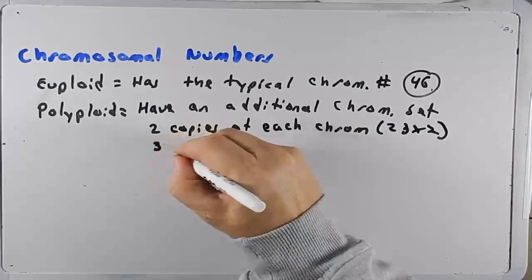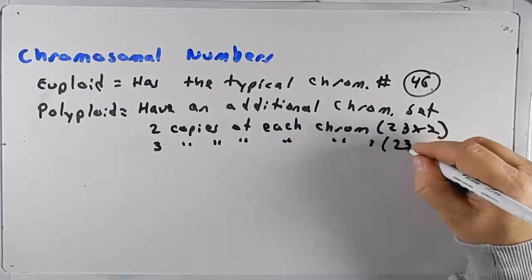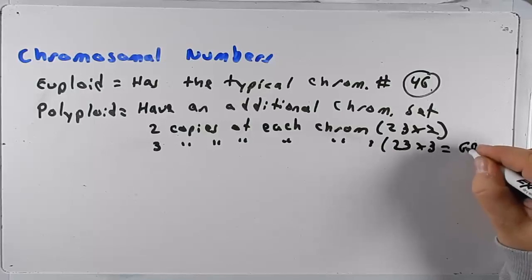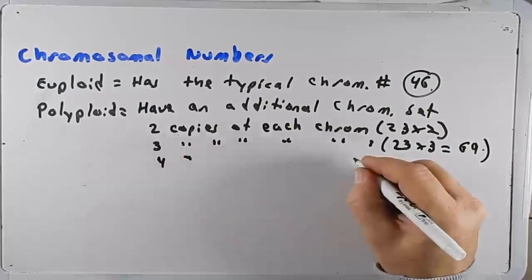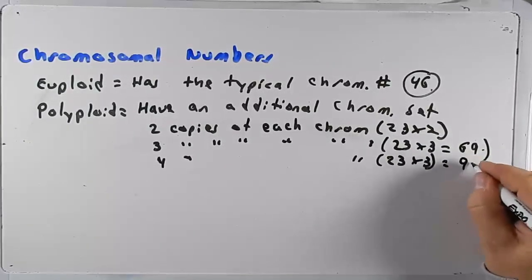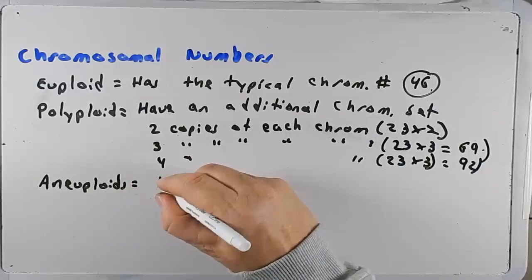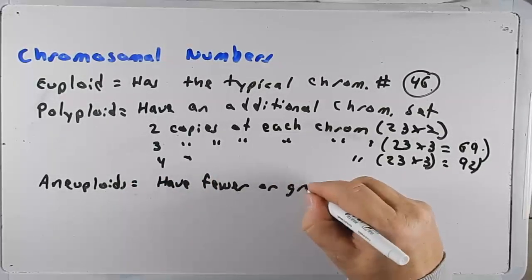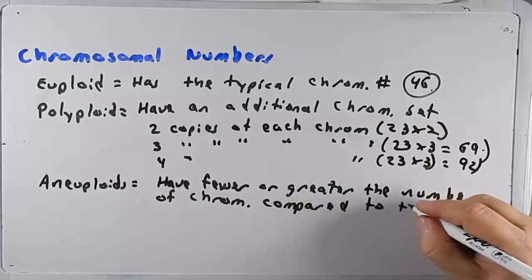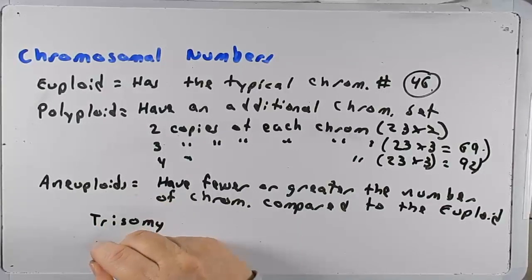A polyploid might have three copies of each chromosome — so that would be 23 times 3, resulting in 69 chromosomes. You could also have four copies of each chromosome, so 23 times 4 gives 92 chromosomes. Then you have aneuploids, which have fewer or greater numbers of chromosomes compared to the euploid. For our purposes, among the aneuploids we're only going to talk about trisomies and monosomies.